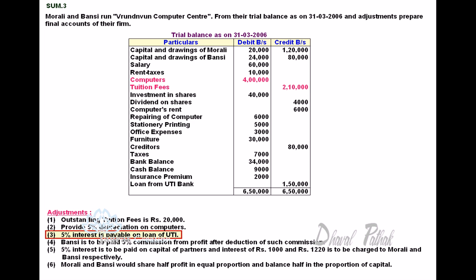5% Interest is Payable on Loan from UTI. Loan from UTI is 1,50,000. On the Liability side of the Balance Sheet, 1,50,000 plus Interest Outstanding will be recorded, and Interest being an expense is debited to Profit and Loss Account.